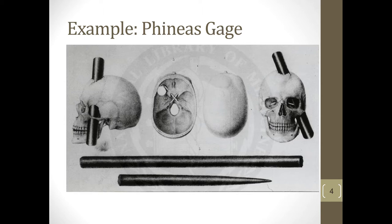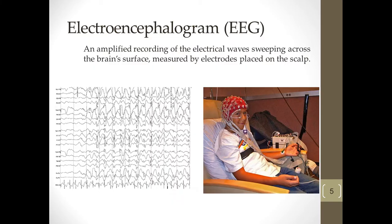We don't have to wait around for a brain injury anymore to study the brain. We have a lot of really exciting technologies that enable us to do much of what we used to do by simple physical observation. We can stimulate areas of the brain with chemicals or electrical impulses, or observe changes happening naturally without directly stimulating the brain. One of the things we do is what's known as an EEG, which gives an amplified recording of neural activity.